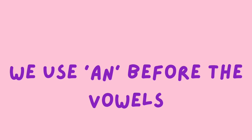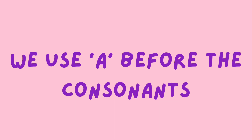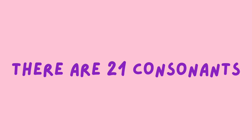We use 'an' before the vowels. Other remaining alphabets are called consonants. We use 'a' before the consonants.